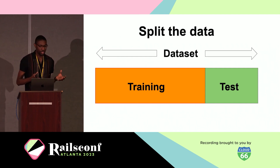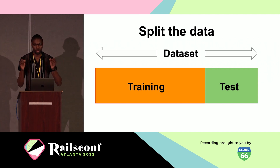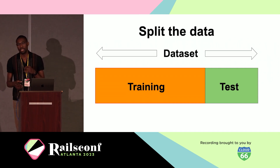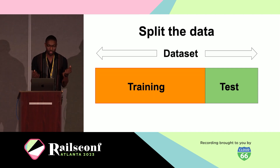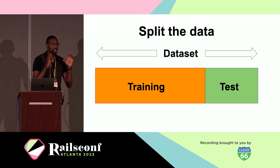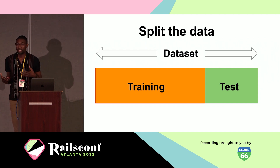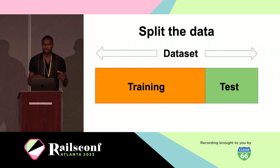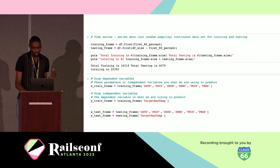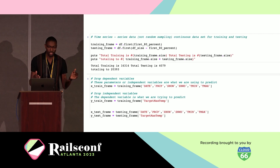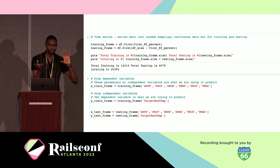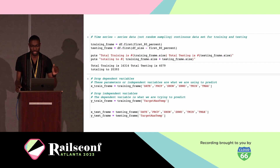As we go about training our models, we're going to have to split the data set before we can train. About 80 percent of the data set is going to be used for training data, and about 20 percent is going to be used for testing. The training data is used to train the model, and then you need a way to validate that it works — the testing data set gives you data points to put into your model to test it. So I just split the data into two: the first 80 percent of the rows is my training data set, and the last 20 percent is my testing data set.